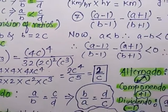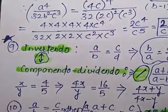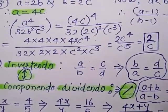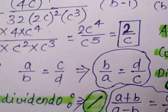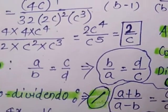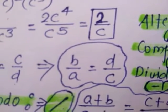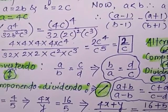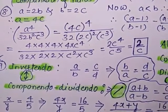Now, properties of equality for operations of equal ratios. The first property is invertendo. In invertendo, we exchange the numerator and denominator with each other. Dividing both sides by A multiplied by C, we get B/A is equal to D/C. So if A/B is equal to C/D, then by invertendo, B/A is equal to D/C.